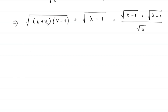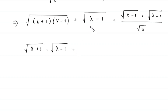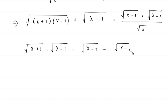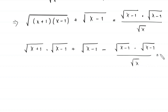Now, this first term can be written as root (x+1) times root (x-1). We move the term root (x minus 1) to the left hand side. This will become negative root x minus 1 times root (x minus 1) divided by root x, is equal to 0.